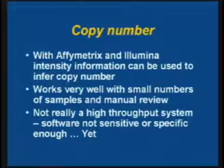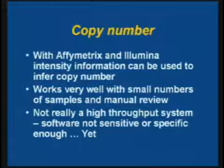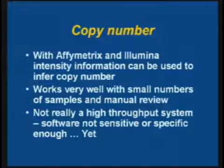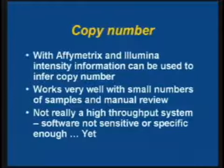Copy number is one of the new things people are really interested in. With both Affymetrix and Illumina, the intensity information can be used to infer copy number, at least for relatively large variants. This works really well with small numbers of samples — in manual review we've identified known well-characterized deletions, insertions, and variants in clinical samples. But it's not really a high-throughput system. You can do a lot if someone looks extensively at one sample across all chromosomes, but you can't do that on 1,000 or 10,000 cases and controls. You need software, and the software isn't really sensitive or specific enough yet, though it's getting better.